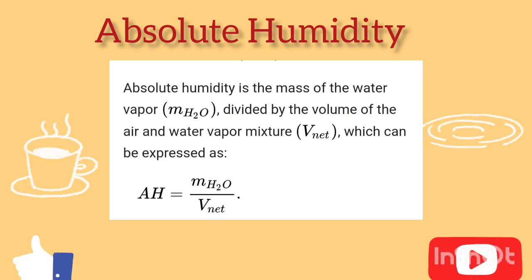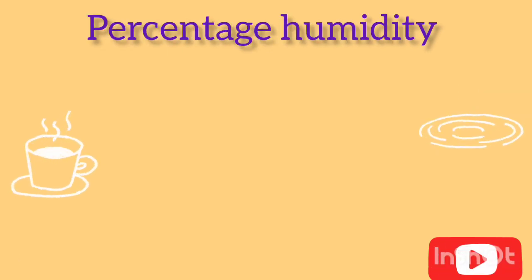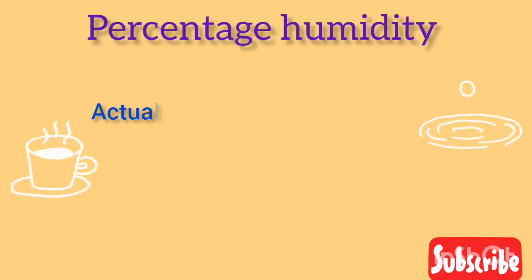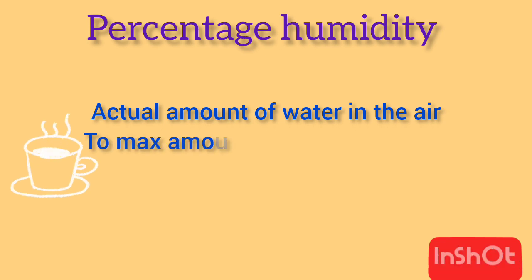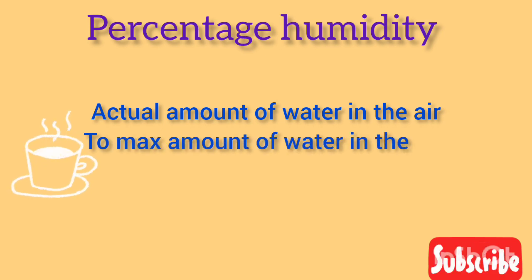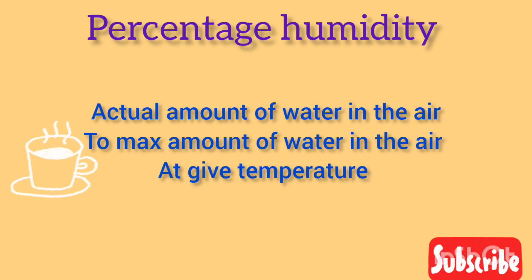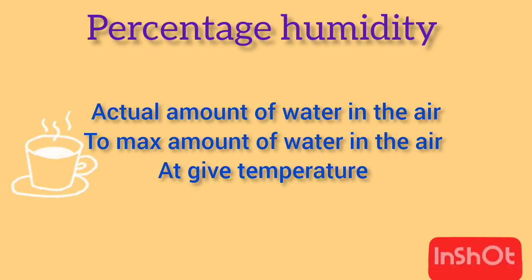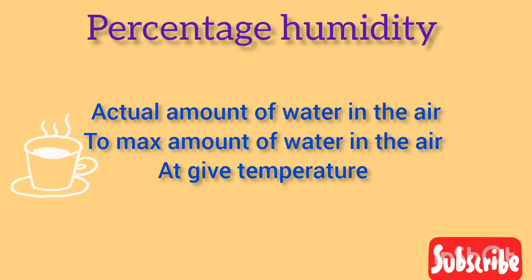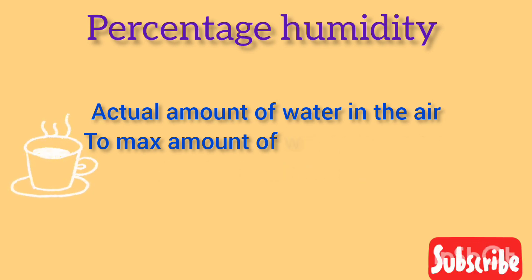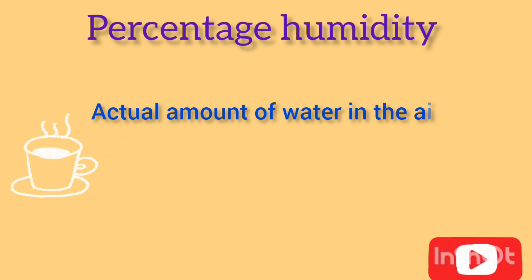Next, we have percentage humidity, which is the ratio of the actual amount of water vapor present in the air to the maximum amount it could hold at a given temperature, expressed as a percentage. For example, if the air is holding half of the maximum amount of water vapor it could hold at a certain temperature, the percentage humidity would be 50 percent.